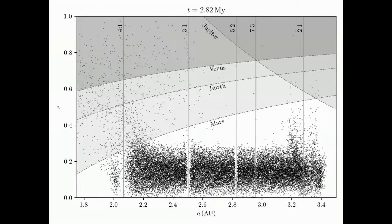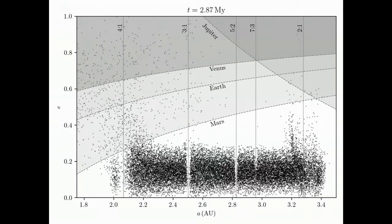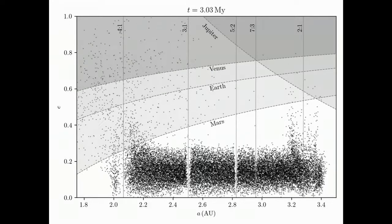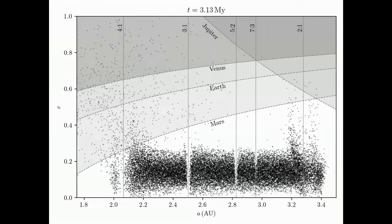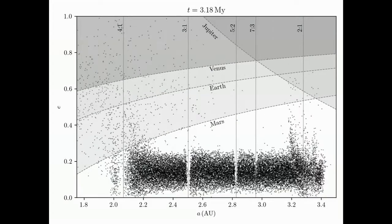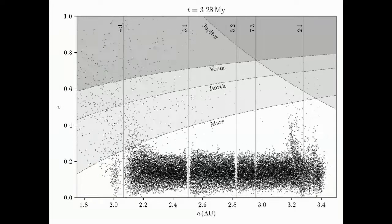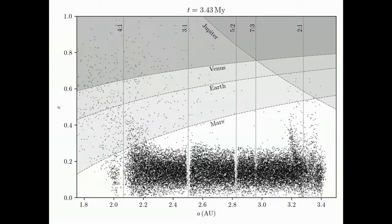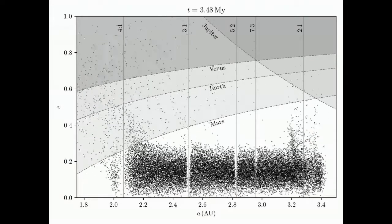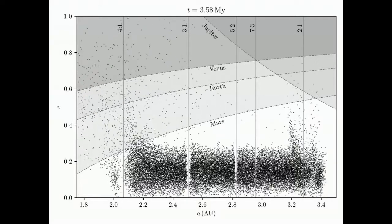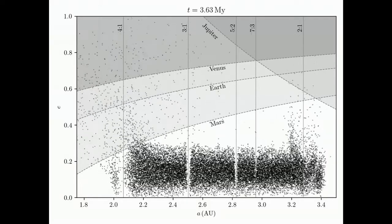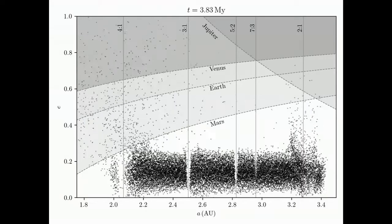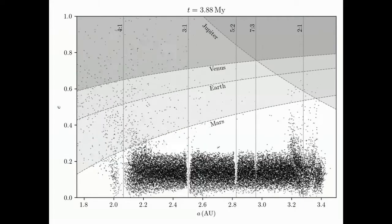Finally, at 5 million years, the gaps have further cleared up and the cloud of slow, semi-major axis planet-crossing asteroids on the left side has thinned considerably as a consequence of planetary encounters. The dashed lines represent eccentricity values above which the asteroids can experience close encounters with planets.